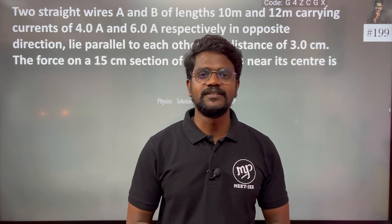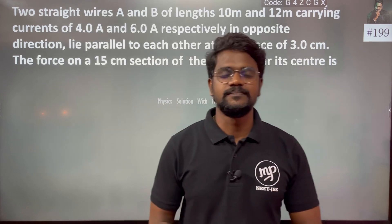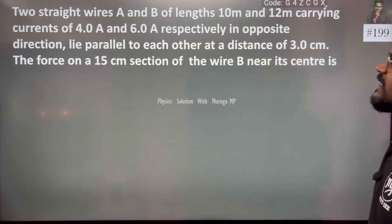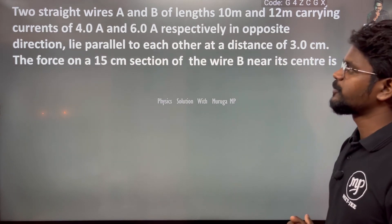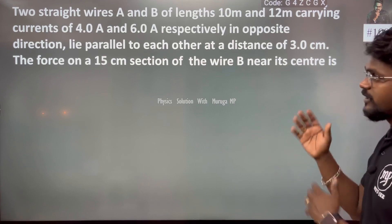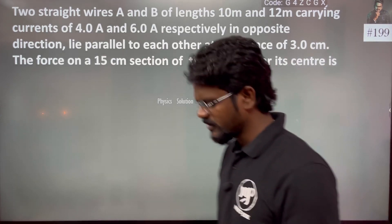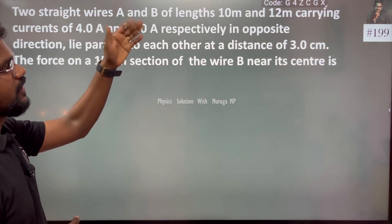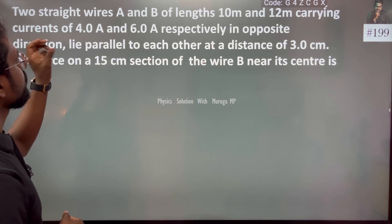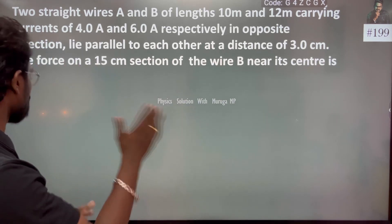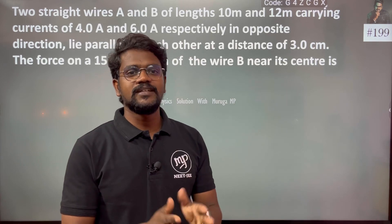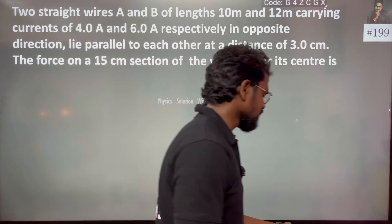Hi everyone. Chapter 4 problem. Two straight wires A and B of length 10 meter and 12 meter carrying a current of 4 ampere and 6 ampere respectively in opposite directions. Two conductors carrying current in opposite directions will repel.